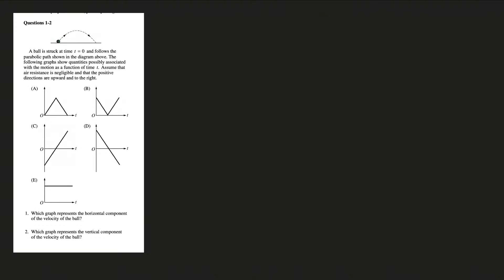The only force acting on this object as it follows this path is gravity, directed downward. So the only component of velocity affected is the vertical component. The horizontal component always stays constant. If we launched it with some velocity at angle theta from the horizontal, that horizontal component always stays constant. Option A shows velocity increasing and decreasing, implying acceleration in that direction — not true. B, C, and D all have non-zero slopes. So the answer must be E, the only one with slope zero, implying no acceleration. For question one, the answer is E.